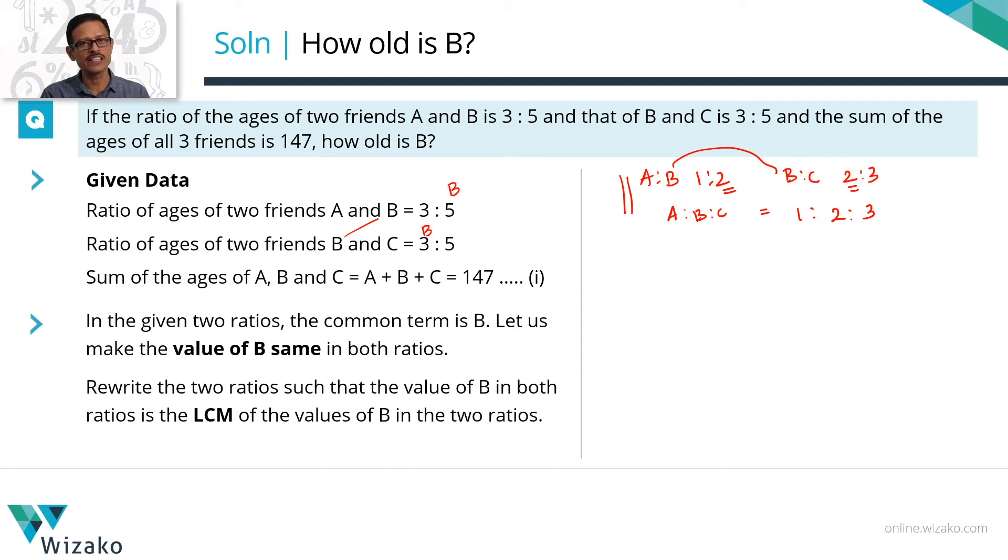The value of B in the first ratio is 5. The value of B in the second ratio is 3. So we're going to make the value of B in both the ratios to be equal to the LCM of 3 and 5. LCM of 3 and 5 is 15.